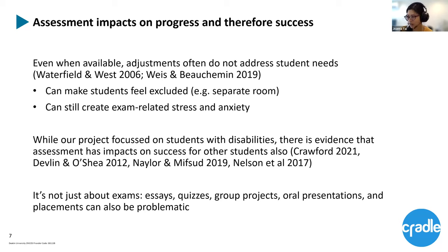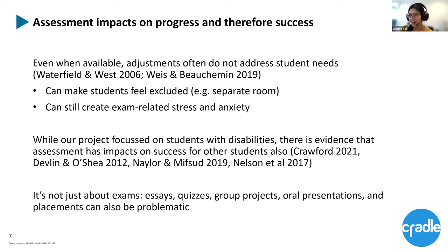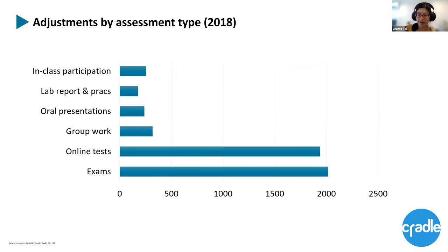Assessment is one of these things that impacts on progress and therefore success. We know from previous research that even when available, adjustments don't entirely address the needs of students, and they can also make students feel more excluded — for instance, having to sit in a separate room or have their exam at a different time. The actual process of obtaining and implementing adjustments can still create exam-related stress and anxiety, meaning students spend more time worrying about accommodations rather than concentrating on the subject material.